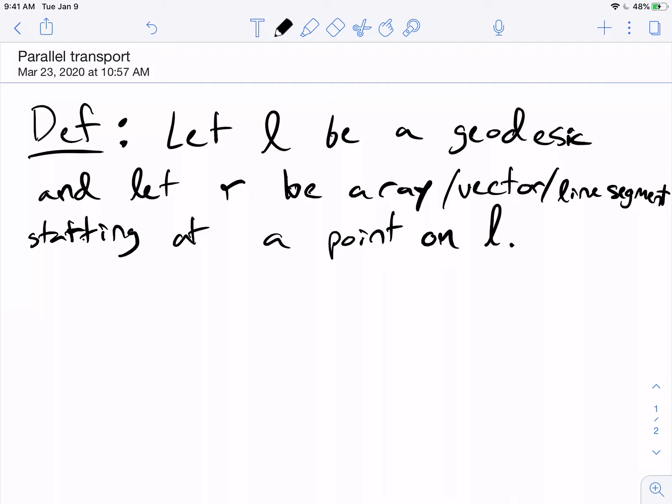So the picture is, here's part of my sphere, here's a geodesic, and I've got a ray, R, coming out of there. This is L. That's the setup.